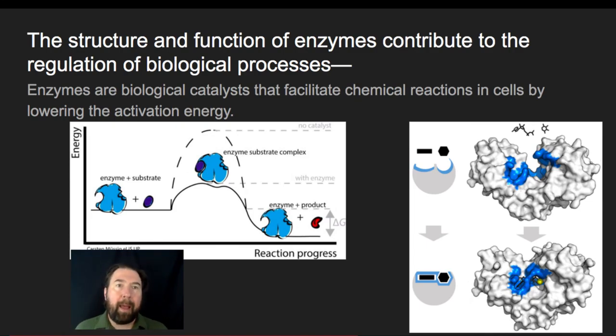Enzymes are biological catalysts. They facilitate chemical reactions in cells by lowering the activation energy. What's the ultimate impact of that on a living system? For us human beings, our body temperature is 37 degrees Celsius or 98.6 Fahrenheit. The vast majority of enzymes that work within our living systems work optimally at a 98 degree temperature.